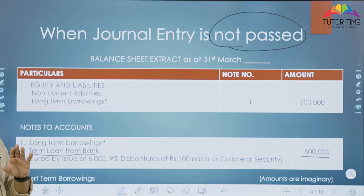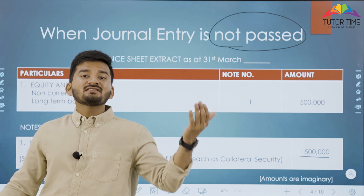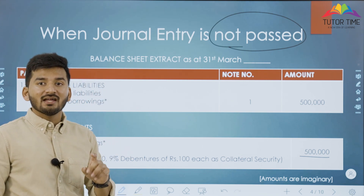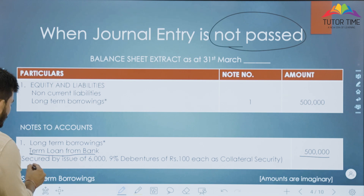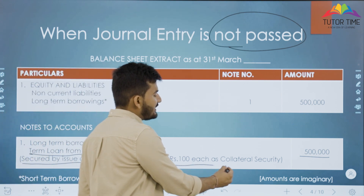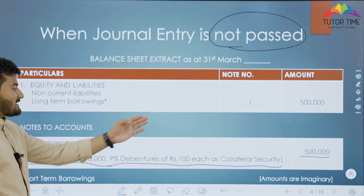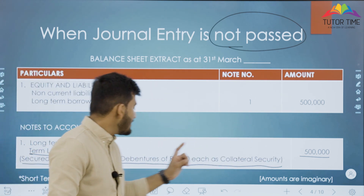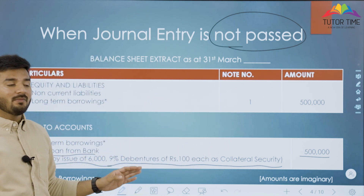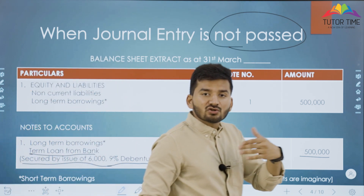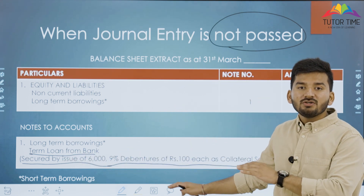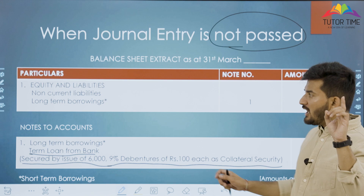Since users of financial statements need to know that a debenture has been issued as collateral security, you just add one disclosure line under the loan: 'Secured by issue of 6,000 9% debentures of Rs. 100 issued as collateral security.' The loan remains 5 lakh. You just need to disclose in the balance sheet that debentures were issued as collateral security.